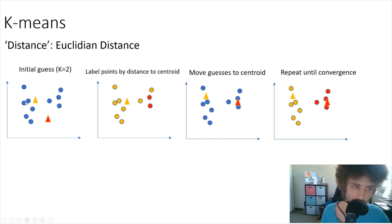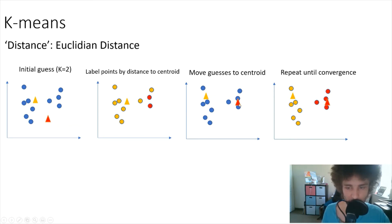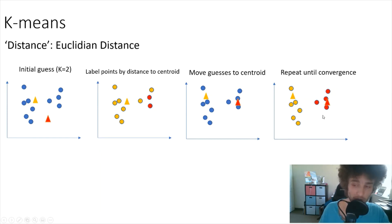So the idea is: you initially guess, use a simple Euclidean distance formula between a given point — you can do this in high-dimensional space, similar to how they use word vectors — and then iterate, moving your centroids to the mean of your previous guesses, until you get convergence and find your final clusters.